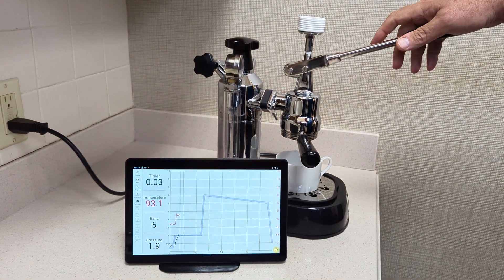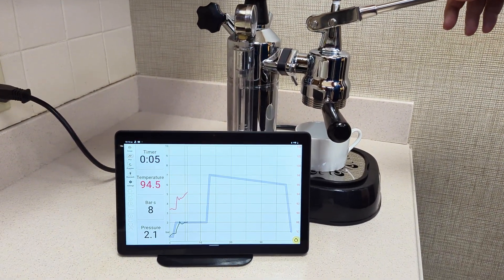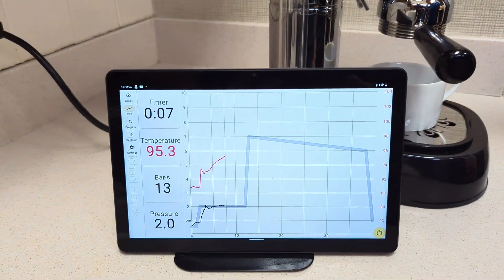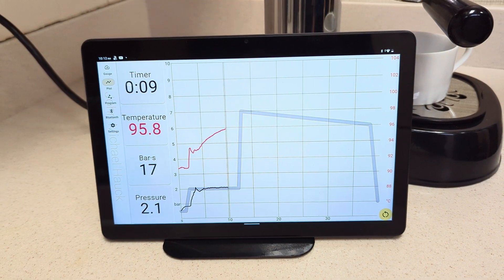I'm going to try to follow this little gray line with the black line. The black line is how hard I'm pressing on the lever, creating about two bar of pressure.